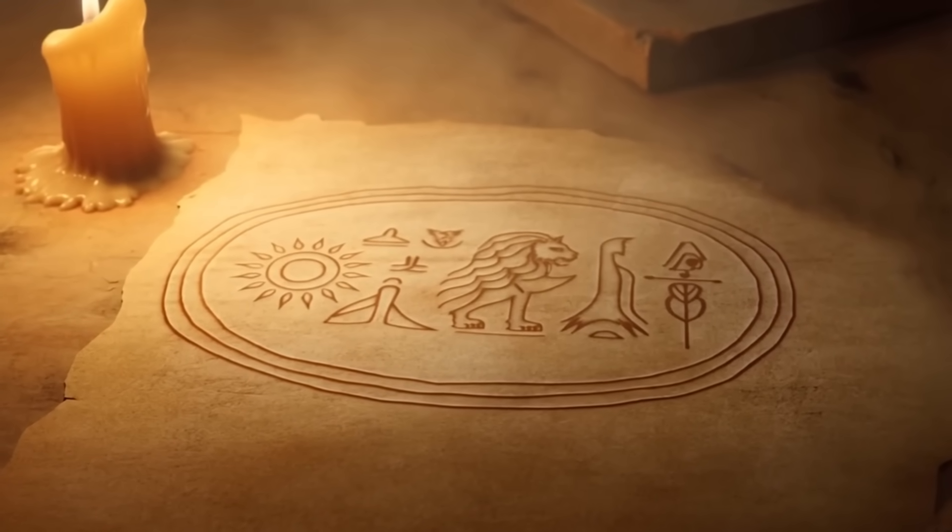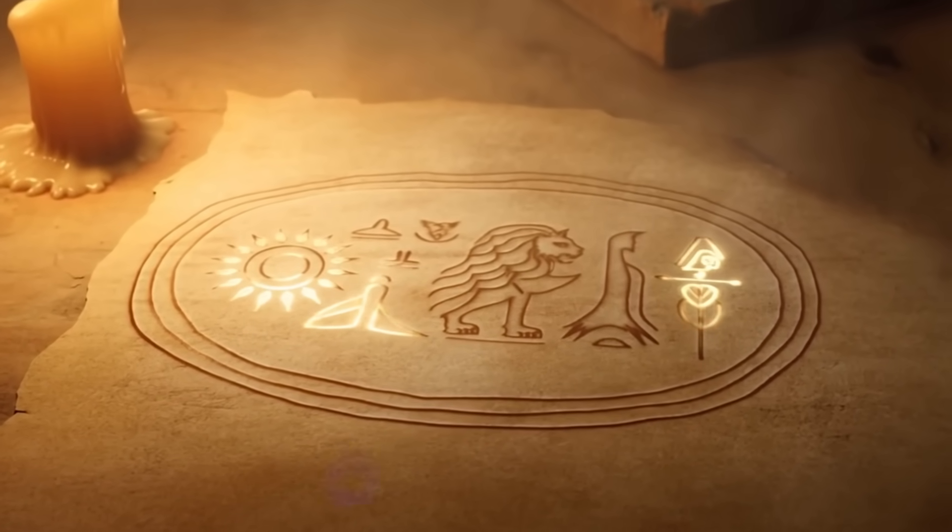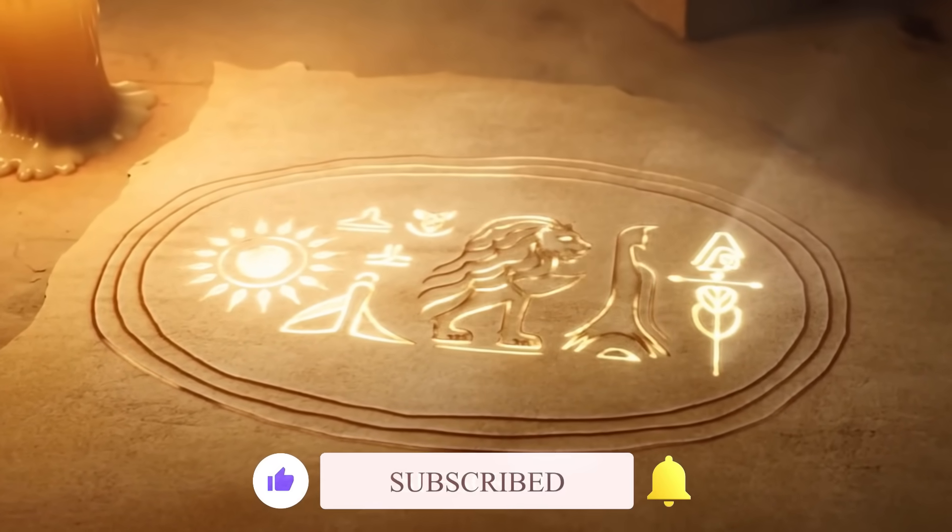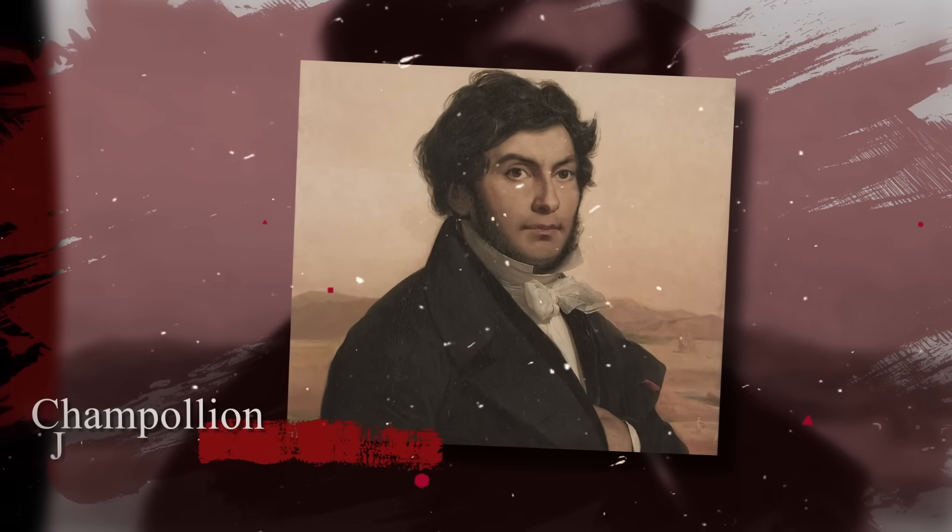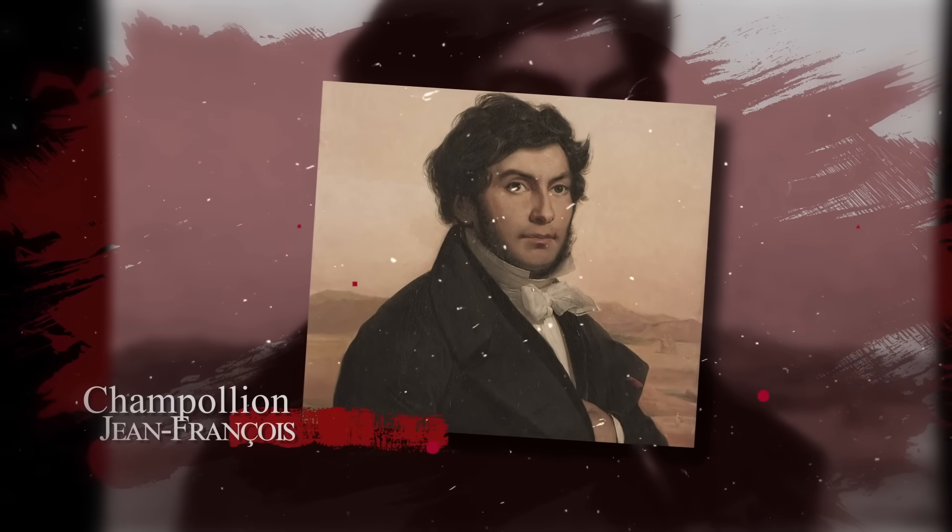In one royal cartouche, he spotted a pattern, a circle for the sun, a lion for L, a reed for I. The name was unmistakable, Ptolemy. Young's analysis cracked the phonetic code, laying the foundation that Champollion would later complete. Together, they bridged centuries of silence.